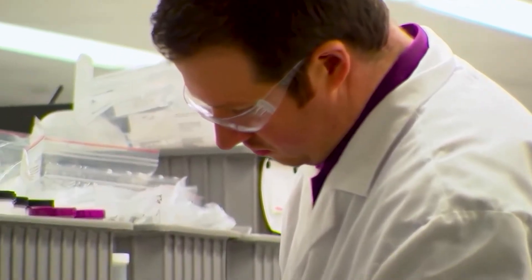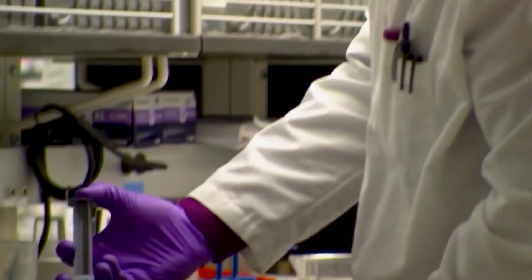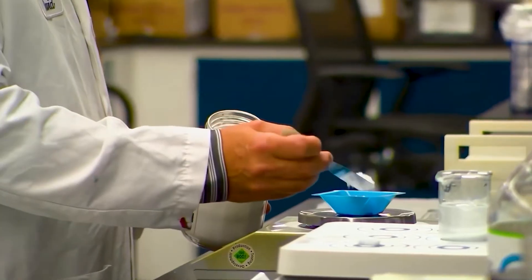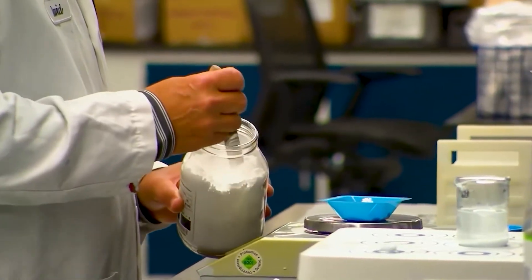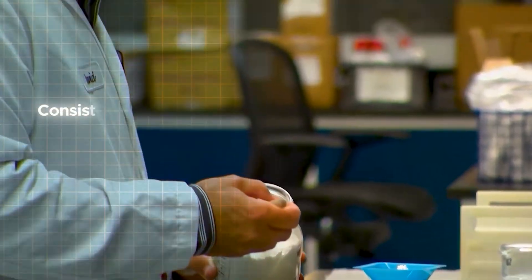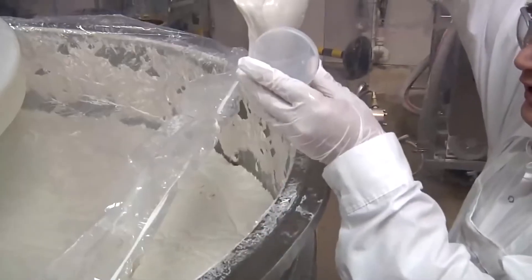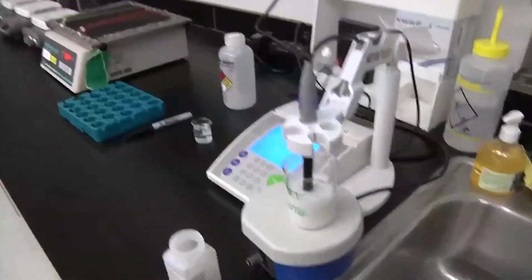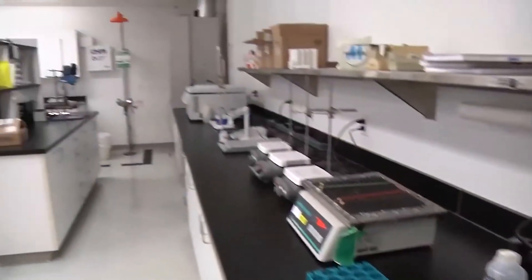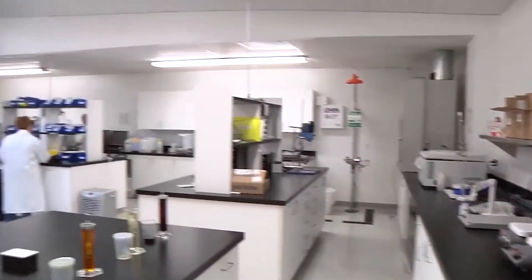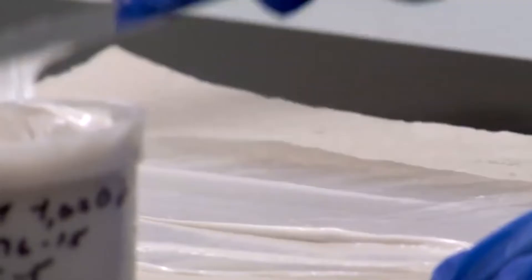Throughout the manufacturing process, quality control tests are conducted to check for consistency, pH levels, fluoride content, taste, and other specifications. Any deviations from the required standards are corrected to maintain the product's quality.